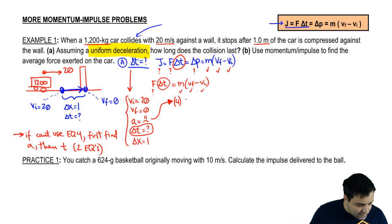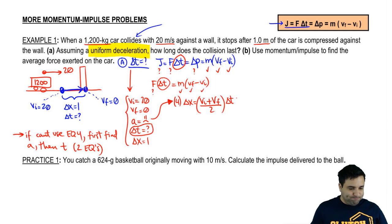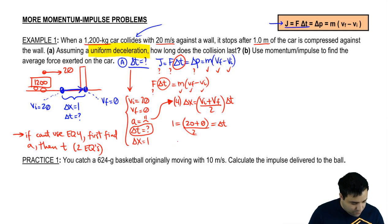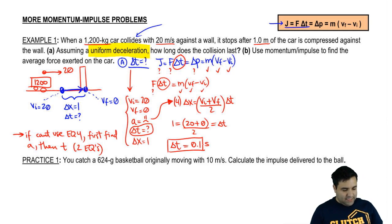So equation number four says that delta x equals v initial plus v final over 2 times delta t. Hopefully you can use this and it would be easier. All right, so let's move some stuff around. Delta x is 1, v initial is 20, v final is 0, and this is 2. So that's your delta t. So this becomes a 10. So your delta t is 1 over 10, or 0.1. So your collision is 0.1 seconds.